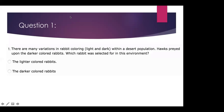Alright, we're going to get started. There are many variations in rabbit coloring — white and dark — within a desert population. Hawks preyed upon the darker colored rabbits. Which rabbit was selected for in this environment? So if the hawks preyed on the darker ones, the one selected would be the lighter colored rabbits, because they're the ones not getting eaten — they're selected for the environment. Does that make sense?